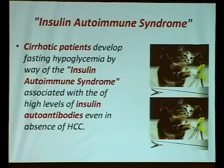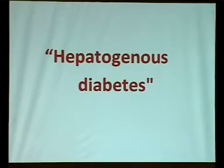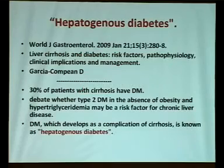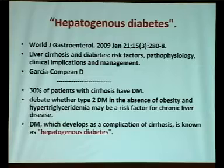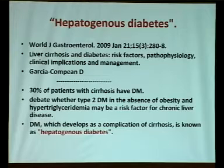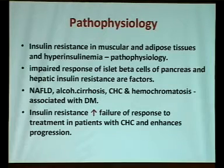Insulin autoimmune syndrome is associated with high levels of insulin autoantibodies even in the absence of insulinoma, causing cirrhotic patients to develop fasting hypoglycemia. A new terminology — 'hepatogenous diabetes' — was presented in the World Journal of Gastroenterology in 2009 by Jaurica et al. Diabetes which develops as a complication of cirrhosis is called hepatogenous diabetes. In this study, 30% of patients with cirrhosis had diabetes. The insulin resistance is the major pathogenesis for both NAFLD and hepatogenous diabetes, involving impaired response of pancreatic beta cells and hepatic insulin resistance.